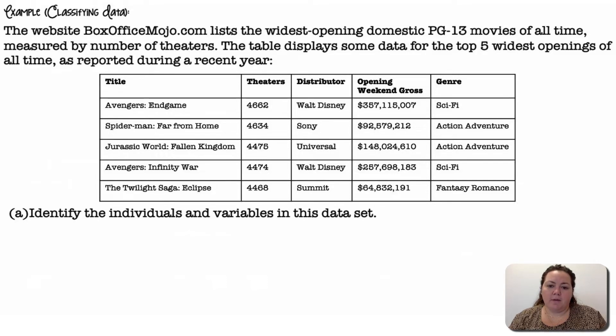So we have five movie titles, the theaters, how many theaters they were played at, what distributor they're from, the opening weekend gross amount of money they brought in, and the genre. Identify the individuals and the variables in this data set.